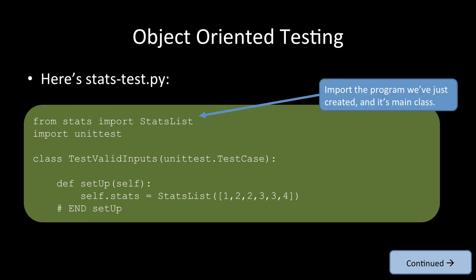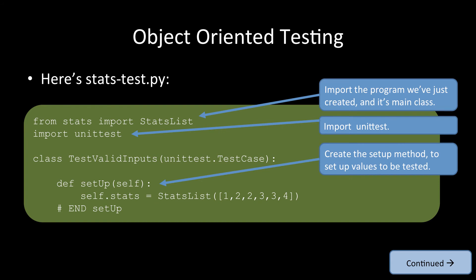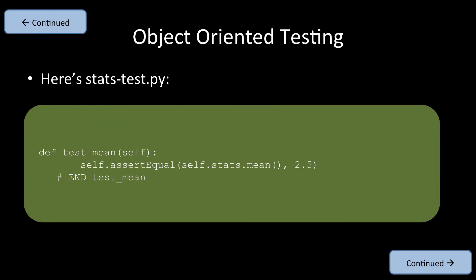From stats import StatsList is importing the program we want to test. This is importing unittest. Then we're creating this setUp method to initialize some values. Our program to test the mean simply says that we assertEqual that if we call the program self.stats.mean, that the mean is 2.5. So if we calculate the mean on the list coming in, it's 2.5. We want to check if the mean works by checking if we get the value 2.5.